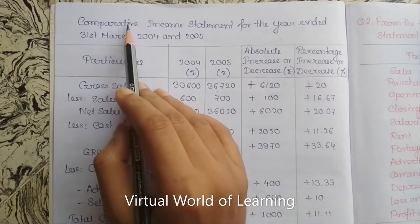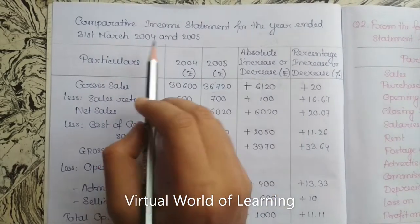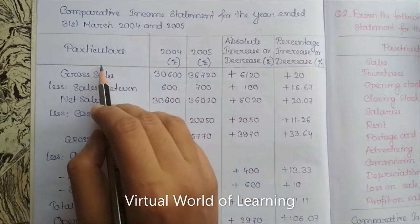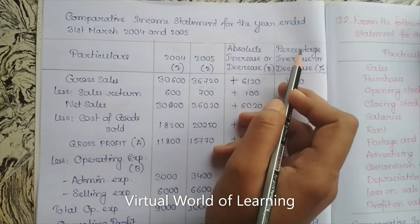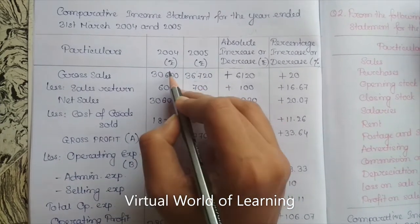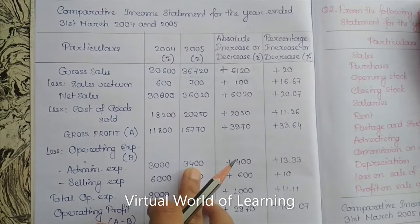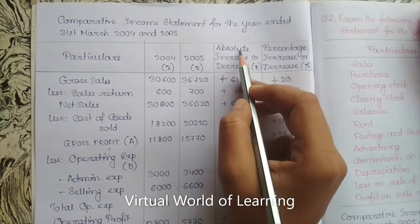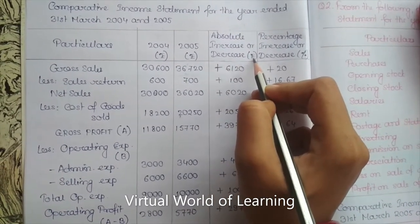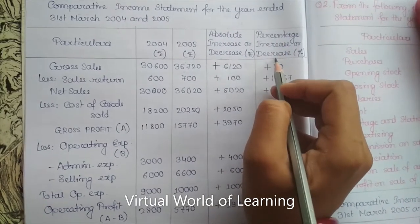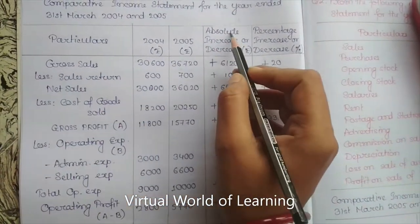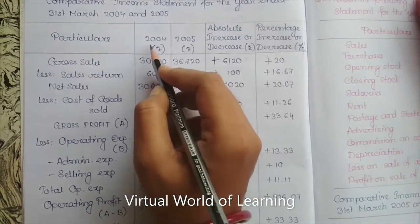Now let's solve this problem. First, we write the heading as 'Comparative Income Statement for the year ended 31st March 2004 and 2005.' After particulars, we draw four columns: the first column is the 2004 amount, second is 2005 amount — both denoted by the rupee sign. For the answer part, we draw two more columns: one for absolute increase or decrease (rupee) and another for percentage increase or decrease (percentage sign).